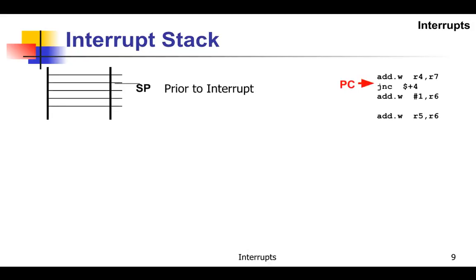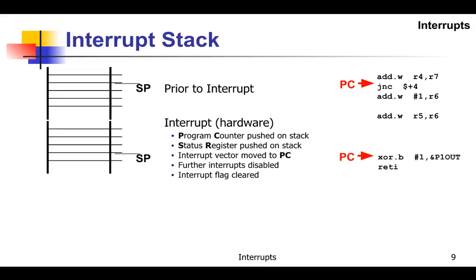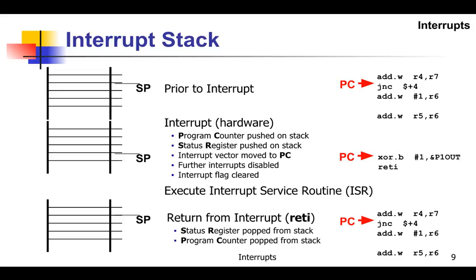Looking at what happens on the stack: the main program is executing — about to execute JNC — when an interrupt occurs. The program counter and status registers are pushed on the stack, so the stack pointer moves down. Further interrupts are disabled, and the program counter is initialized with the value from the interrupt vector table, jumping to the interrupt service routine. After the ISR finishes, the status register and program counter are popped from the stack, and execution resumes right where it left off in the main program.